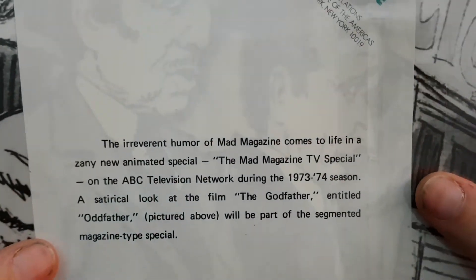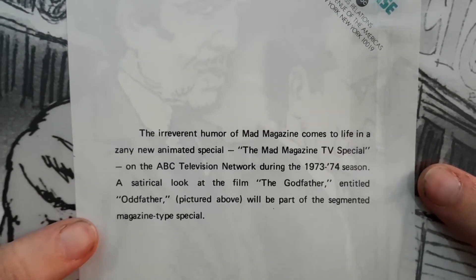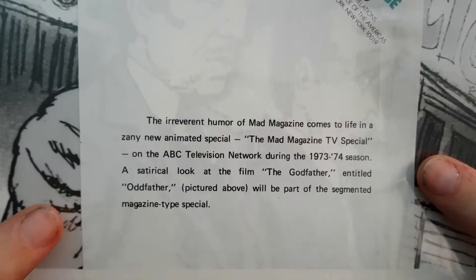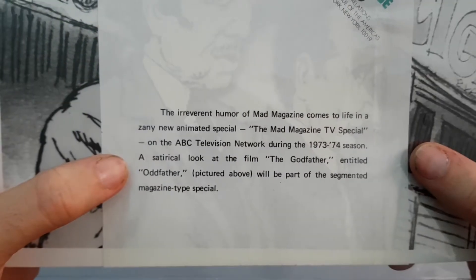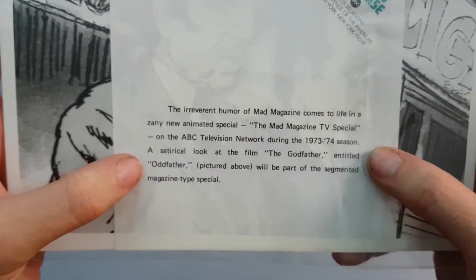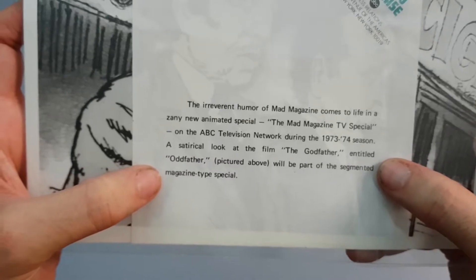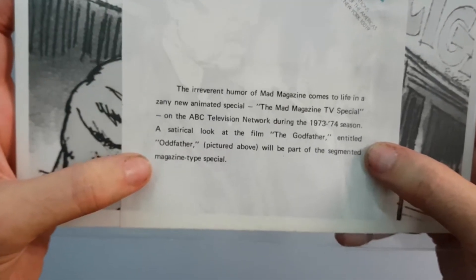I've got a tagline here: the irreverent humor of Mad Magazine comes to life in a zany new animated special, the Mad Magazine TV special on the ABC television network during the 1973-74 season. A satirical look at the film The Godfather entitled Oddfather, pictured above, will be part of the segmented magazine type special.